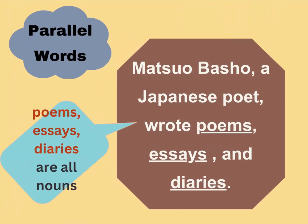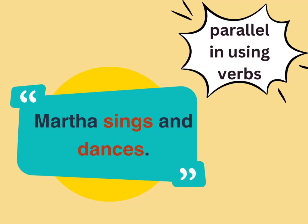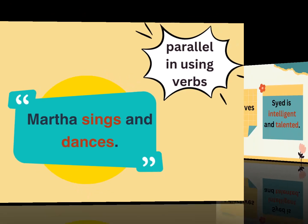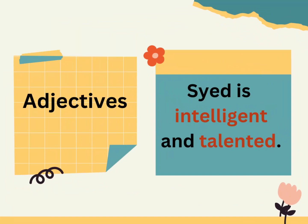Example of parallel words in a sentence: The words poems, essays, and diaries are all nouns. Therefore, this sentence has parallelism. Another example: Martha sings and dances — the words sings and dances are parallel, using verbs. Moving on: Seed is intelligent and talented — the words intelligent and talented are all adjectives. Thus, this sentence achieves parallelism.